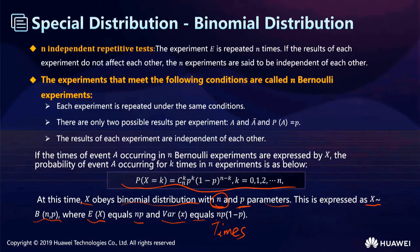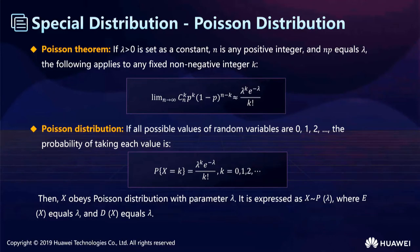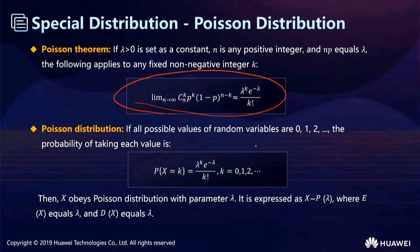Let's see another special distribution: the Poisson distribution. It is a little difficult. The page shows the definition. The Poisson distribution arises from the Poisson theorem: if lambda is greater than 0 and is a constant, and n is any positive integer with np equal to lambda, then for any fixed non-negative integer k, the formula gives the Poisson probability. The possible values of the random variable are 0, 1, 2, and so on.